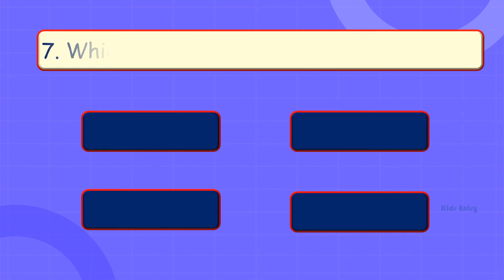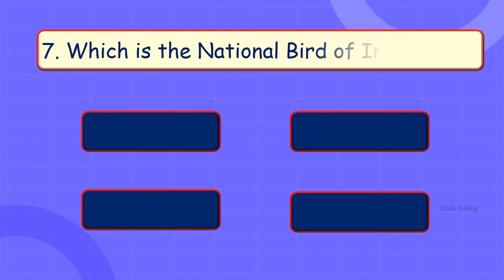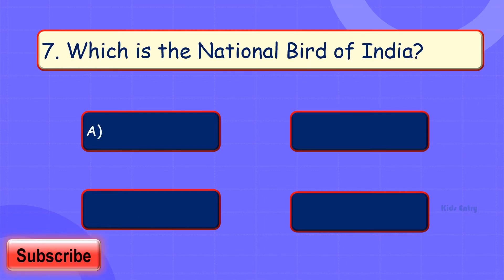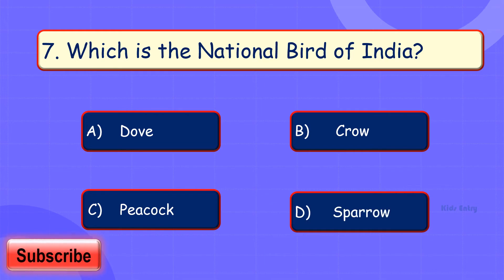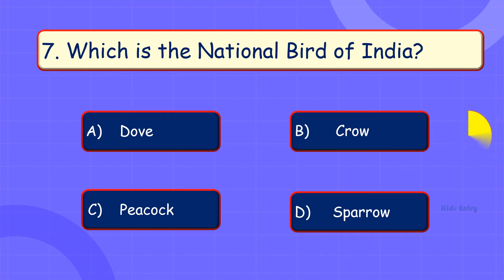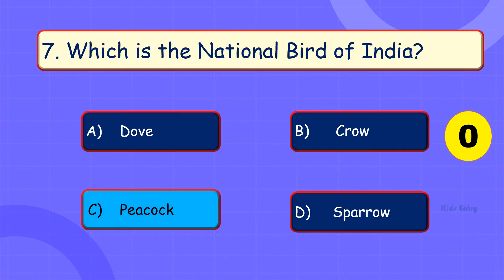Which is the national bird of India? A. Dove. B. Crow. C. Peacock. D. Sparrow. Answer is Option C: Peacock.